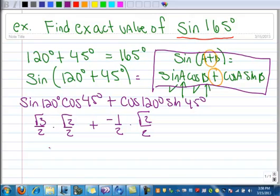So multiplying those fractions out, we get √6/4, and this is a minus. So we're going to have √2/4, and then I'm just going to work sideways here. I'm running out of room.